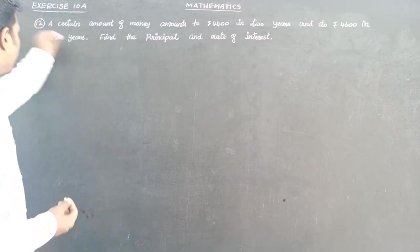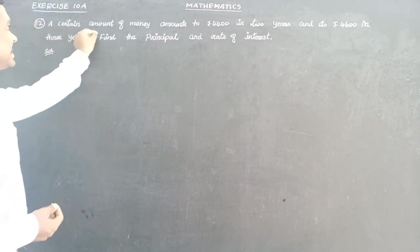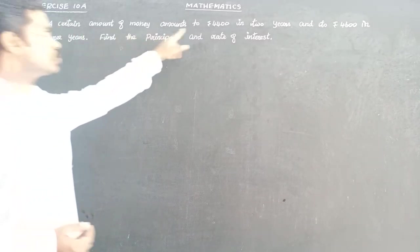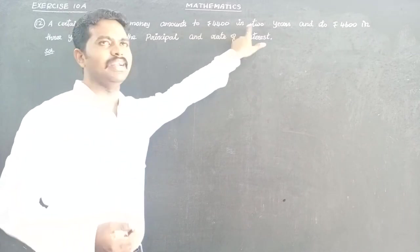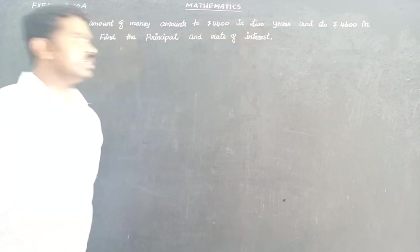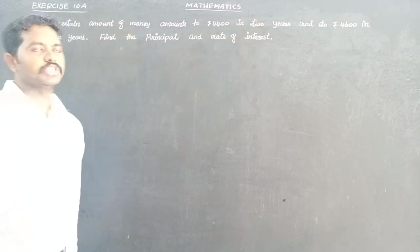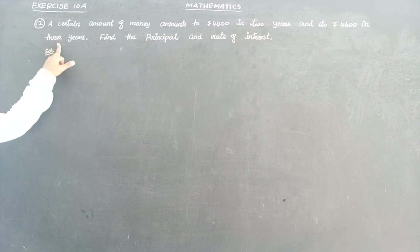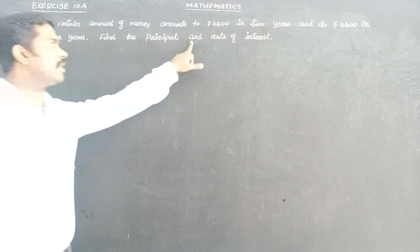Exercise 10A, question number 12. A certain amount of money amounts to 4,400 in 2 years and 4,600 in 3 years. Find the principal and the rate of interest.